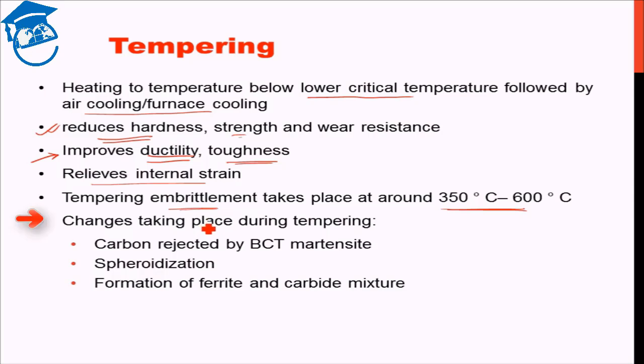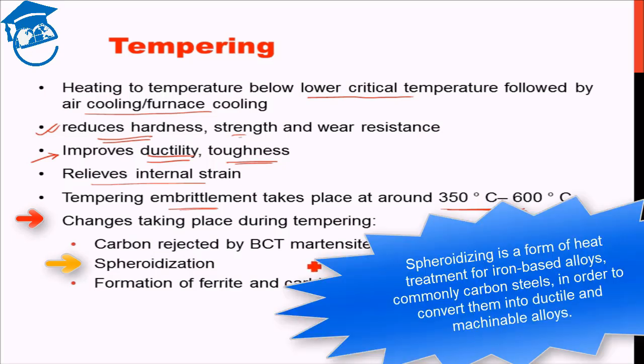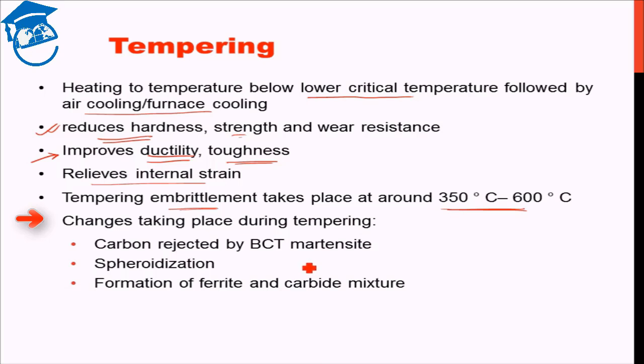Now, what are the physical changes that are taking place when tempering is happening? What is exactly happening that is leading to an improvement in toughness and a reduction in the strength? What is happening is that martensite is really supersaturated with carbon. The BCT martensite is supersaturated with carbon and during tempering some of the carbon is rejected by the BCT martensite. In addition to that, there is some spheroidization taking place. The ultimate microstructure as a result of tempering has ferrite matrix in which very, very fine carbide particles in the form of spheres are dispersed throughout.